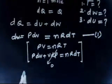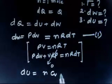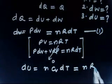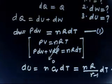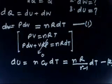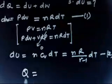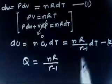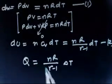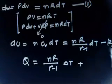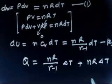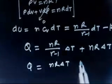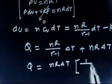Now what will be DU? DU equals N·CV·dT, and CV can be written as R/(γ-1), so DU equals NR/(γ-1)·dT. Now it is given that the heat given to the system is Q, so DQ equals Q. Using DQ = DU + DW: Q equals NR/(γ-1)·dT plus NR·dT. Taking NR·dT common, you get the factor 1/(γ-1) plus 1, which simplifies to γ/(γ-1).